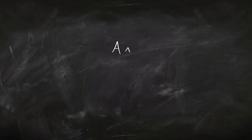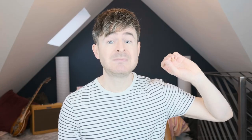Suppose you've got a conjunction, A and B. The rule tells you to add A and B to the tree. Simple. You can then put a tick next to A and B to say: I'm done with that sentence, I don't need to look at it again.